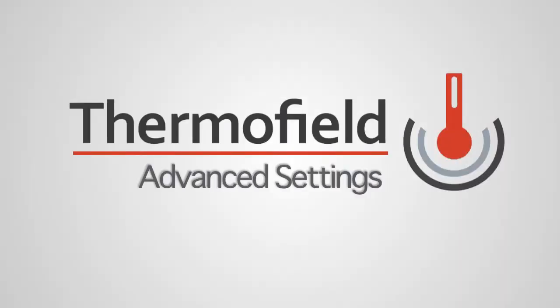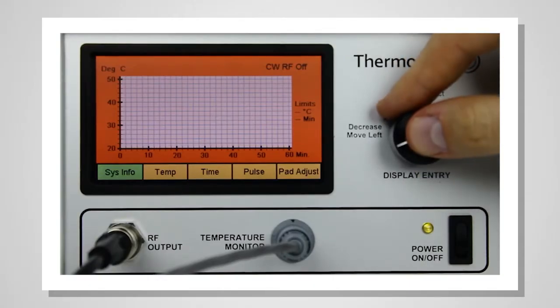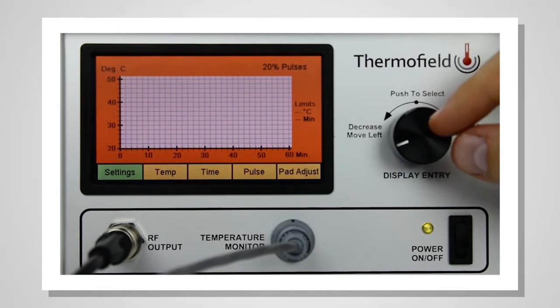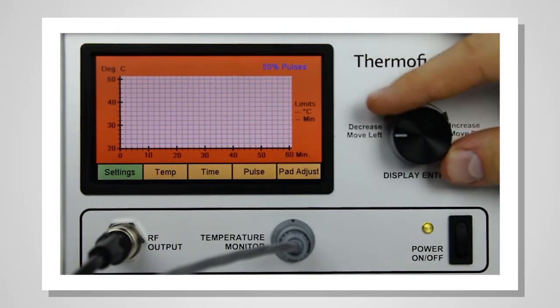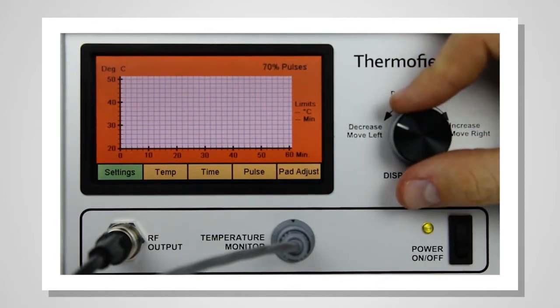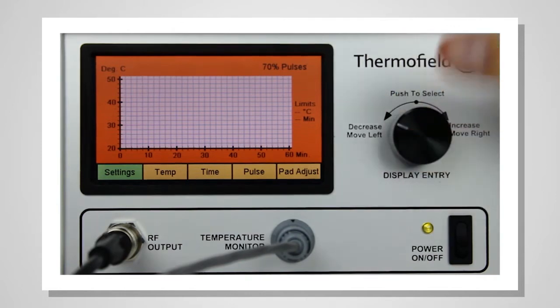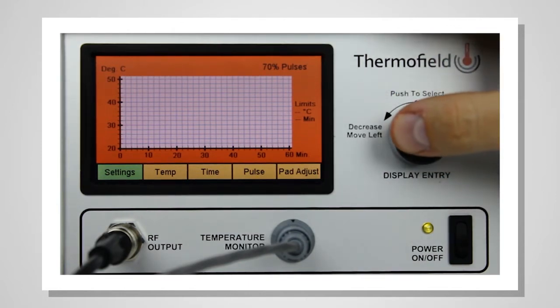The unit also has several advanced settings. To adjust the advanced settings, turn the knob and select the SYSTEM INFO pane. Once you push the knob, the pane will read SETTINGS, and the settings will appear in the top right corner of the display. Turn the knob to view the settings. Once you select the desired setting, it will change to blue.